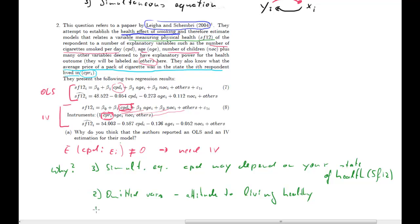Measurement error could also be a problem here. The data are obtained from a questionnaire where someone is asked how many cigarettes they smoke per day on average. Clearly you don't know exactly, so measurement error is a potential issue. All three reasons — simultaneous equations, omitted variables, and measurement error — are plausible here, so it seems quite plausible that we have an endogeneity problem.